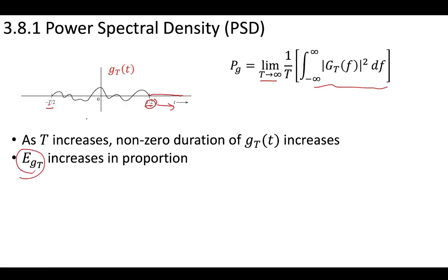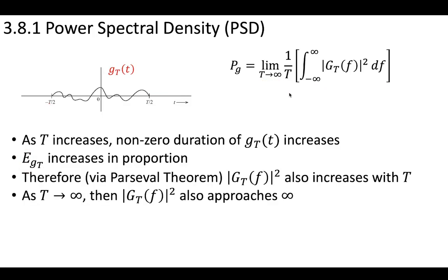As T gets larger and approaches infinity, the energy in the truncated signal also increases in proportion. Via Parseval's theorem, the energy defined in the frequency domain is also going to increase by changing the period. So as the period approaches infinity, the frequency domain energy spectral density is also going to approach infinity — this integral gets larger and larger as the truncated signal gets bigger.